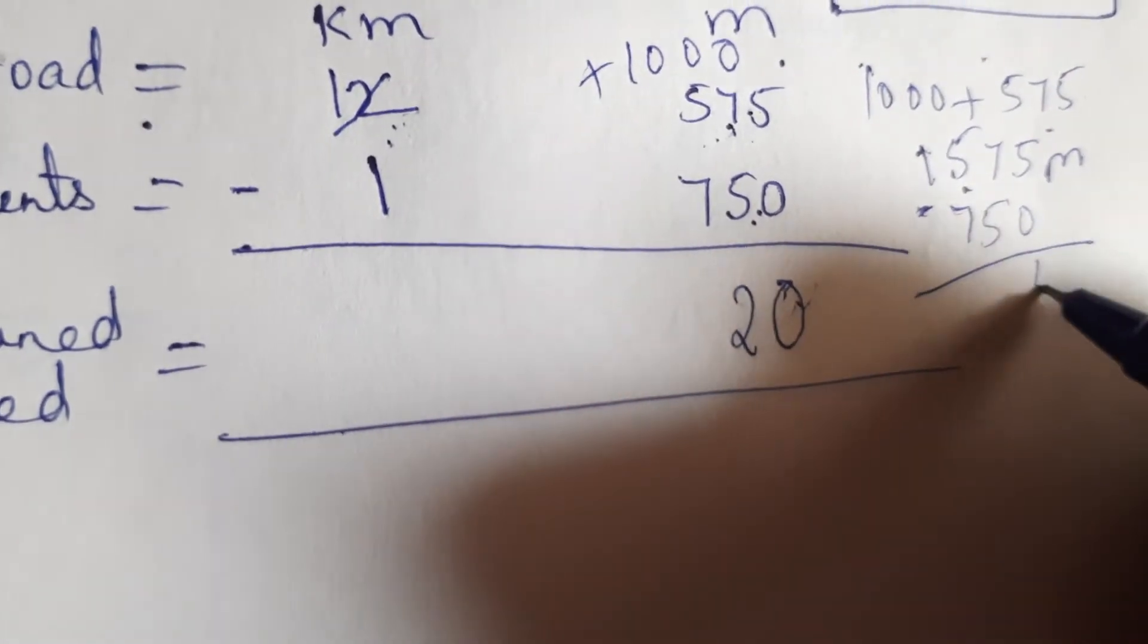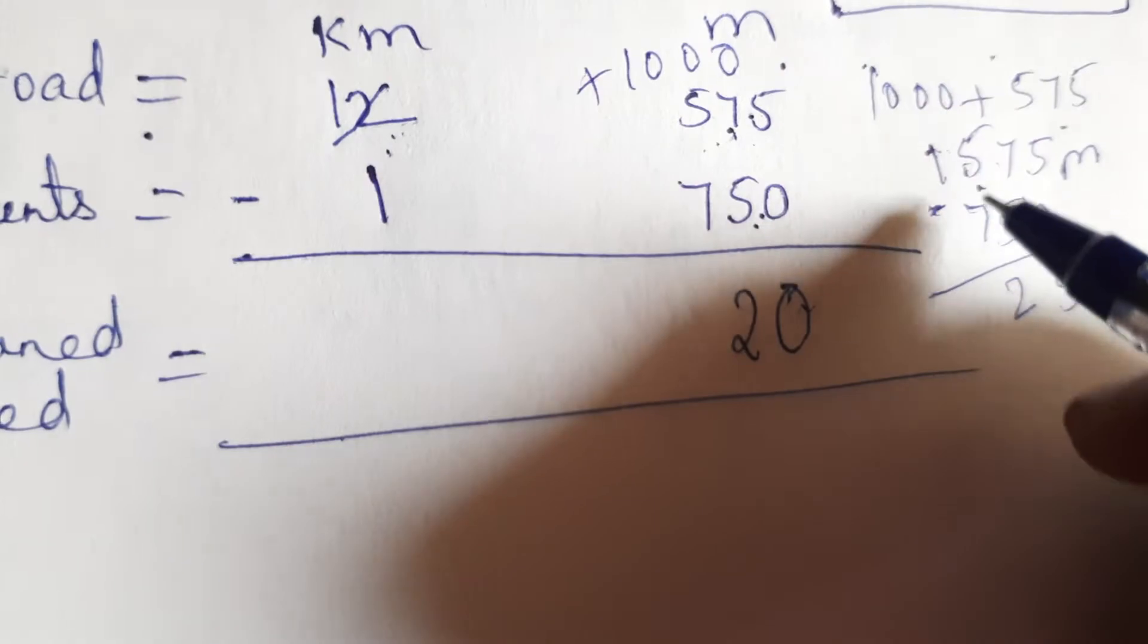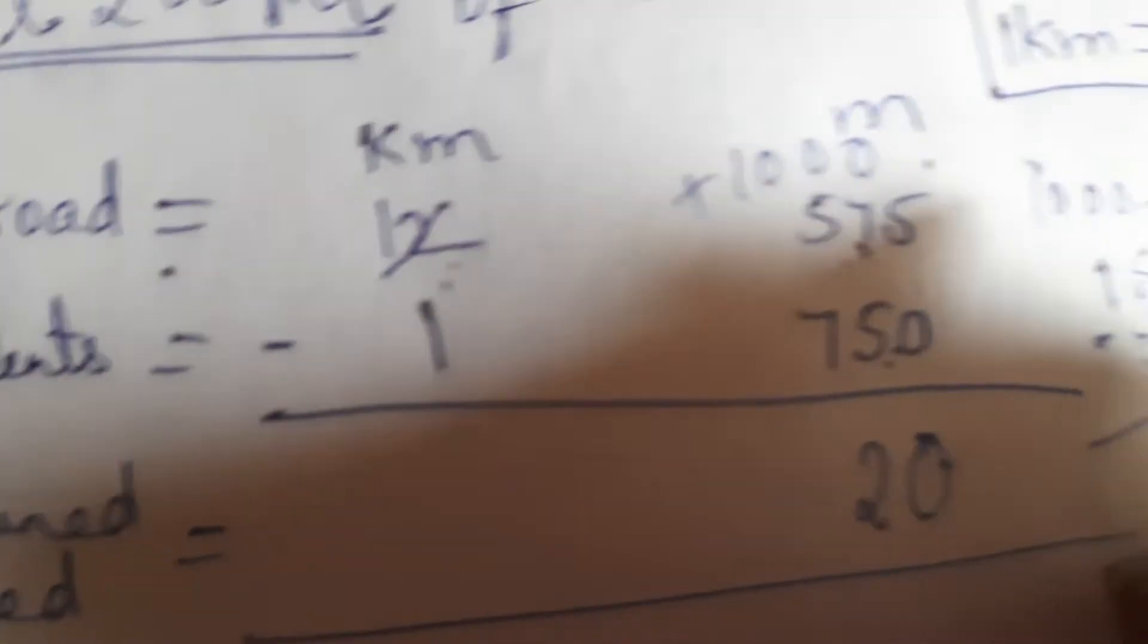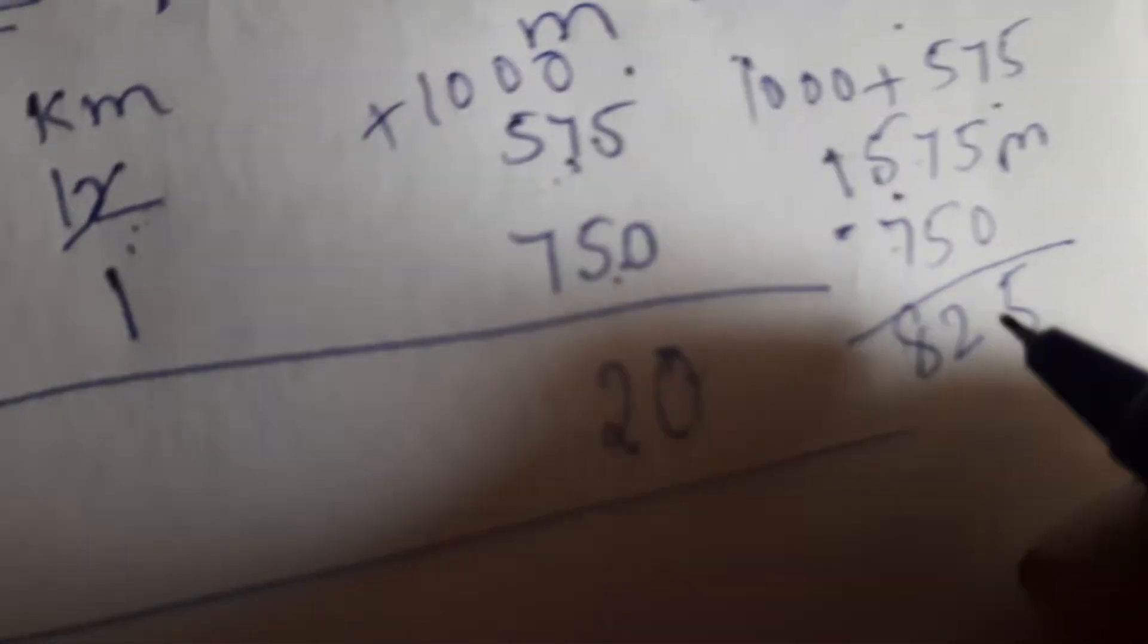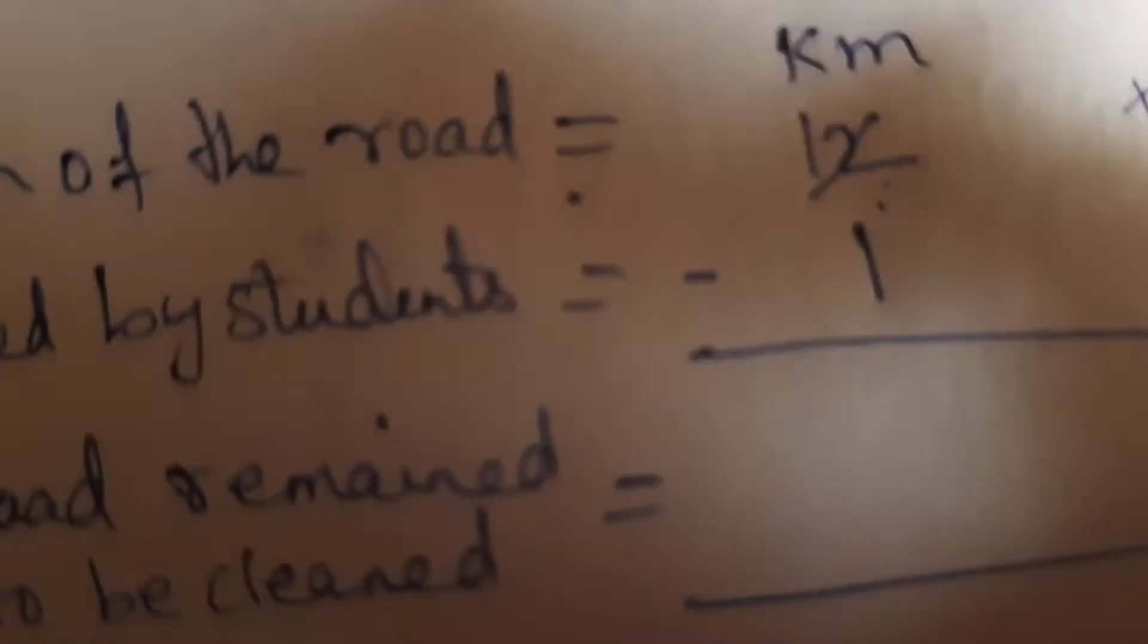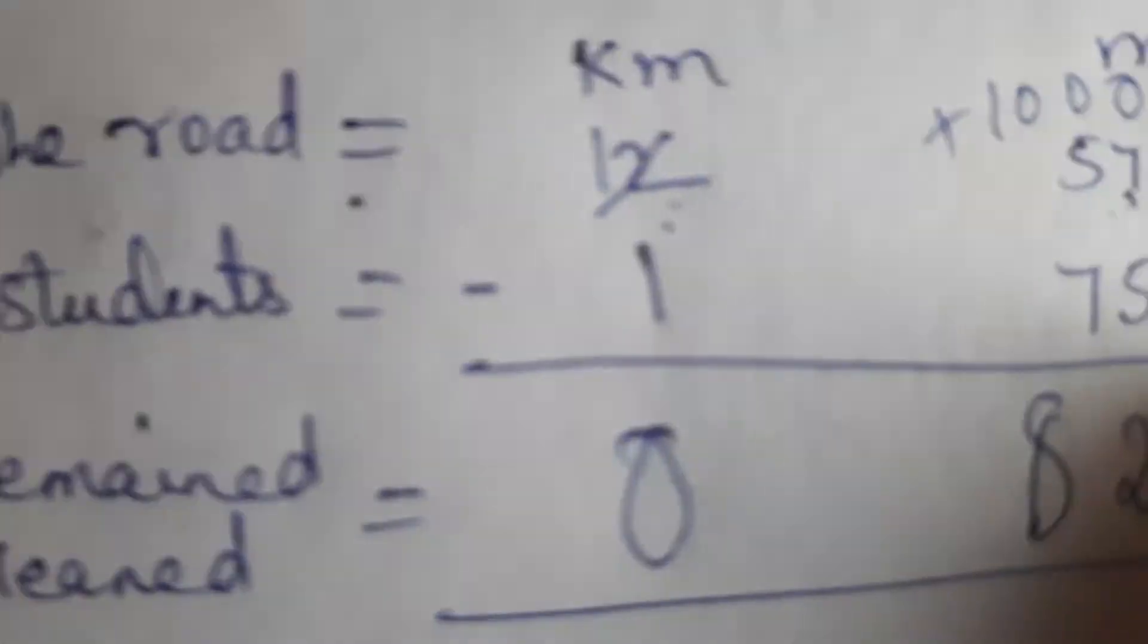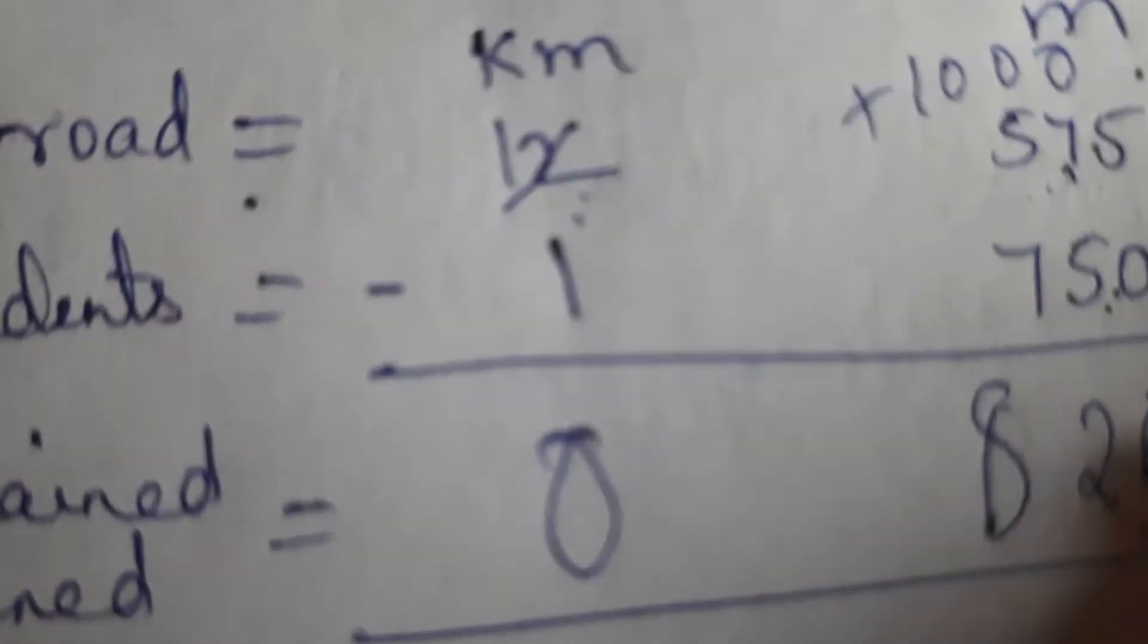Same way your 575 meter is there but we cannot minus 750 from it. So we are borrowing from 2 kilometer and 2 kilometer gives us 1 kilometer which is 1000 meter. So on adding it is 1575 meter. So from this we will have to minus 750 meter children. So see 5 will come down. 7 minus 5 will be 2. 5 minus 15 minus 7. 15 minus 7 will be how much? So 15 minus 7 is 8. So 825. So you will have to write down your 825 meter.